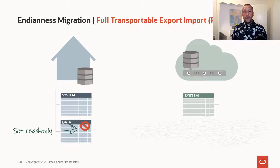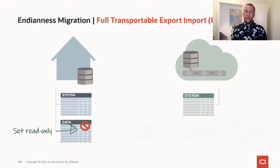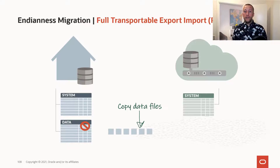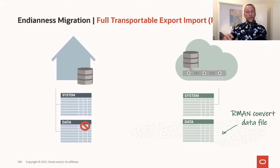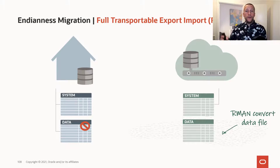When migrating the database, I start by setting the data tablespace to read-only. The source database is still online, but since the user data tablespace is read-only, it does in effect mean that I have downtime. I can then copy the data files to the target database and use RMAN to convert the data file. Be aware that the conversion happens while RMAN copies the file to a new location — so if you have a 5TB data file, you need an additional 5TB of storage to hold the copy. This is one of the downsides: you need double the amount of disk space.